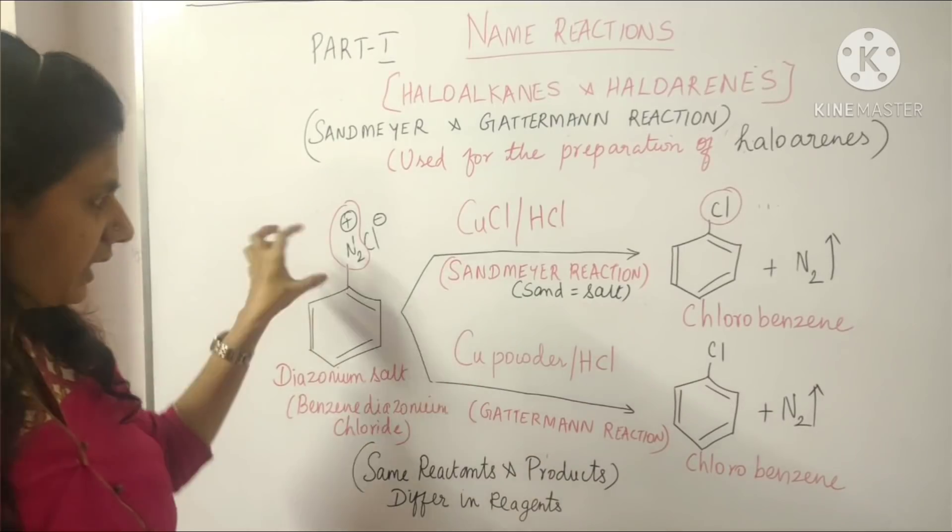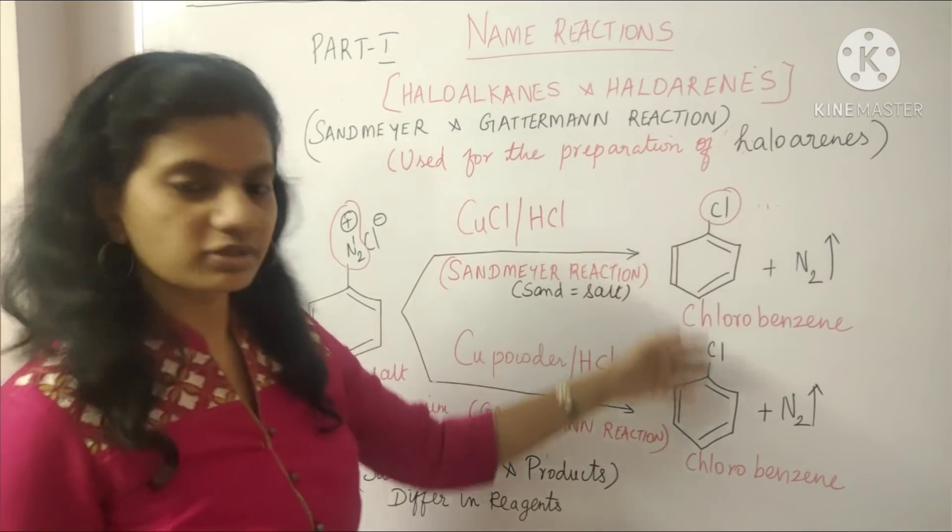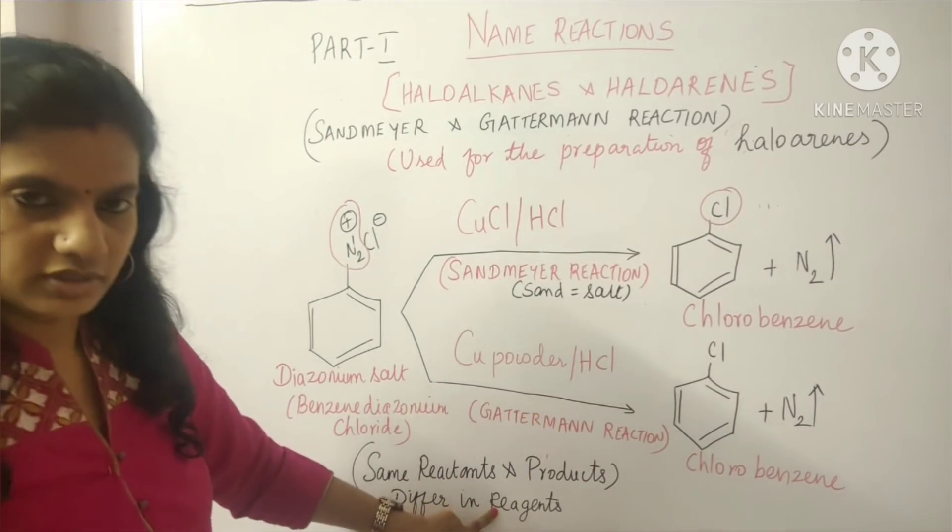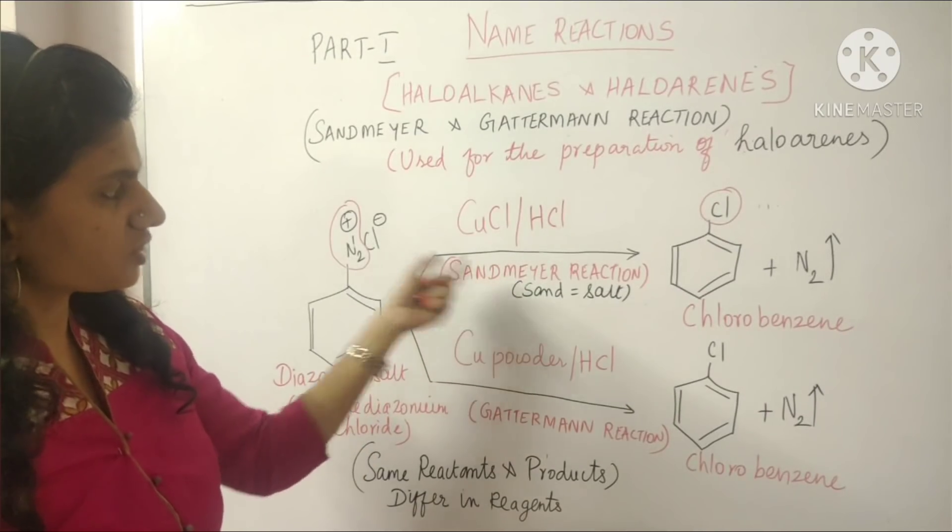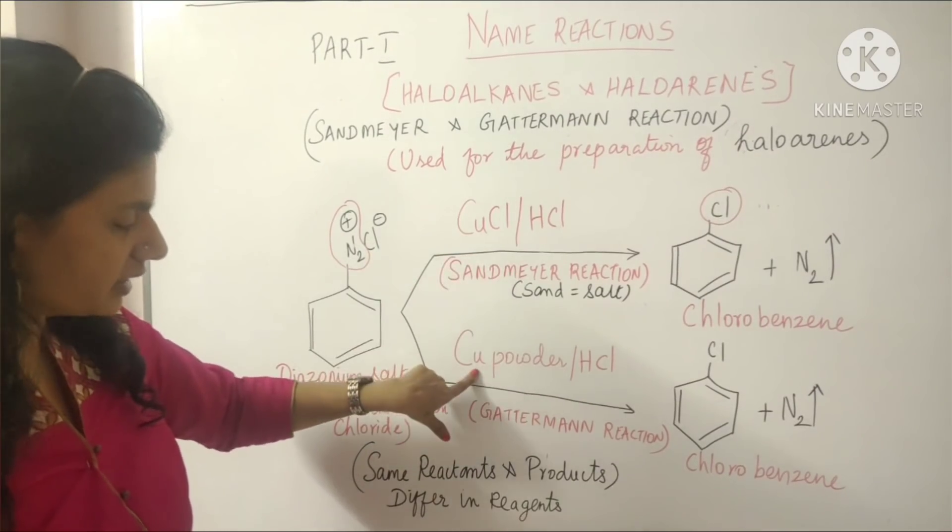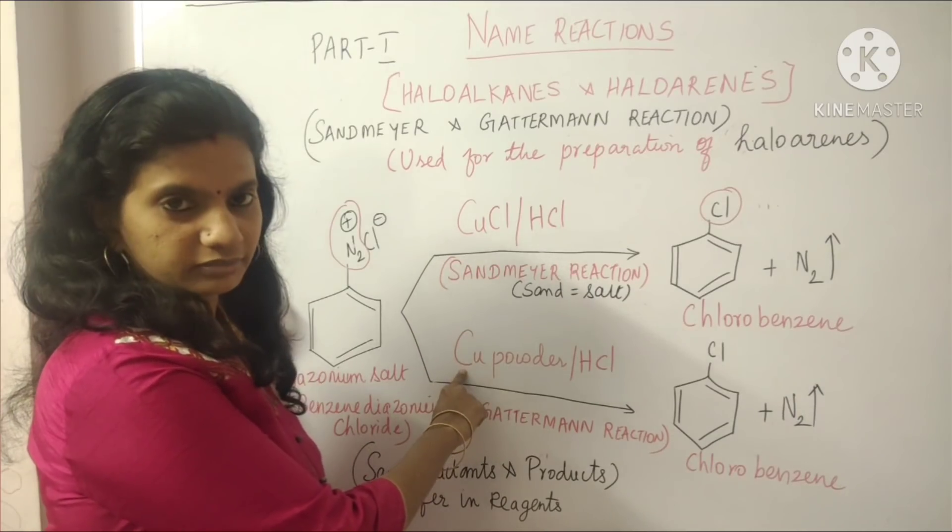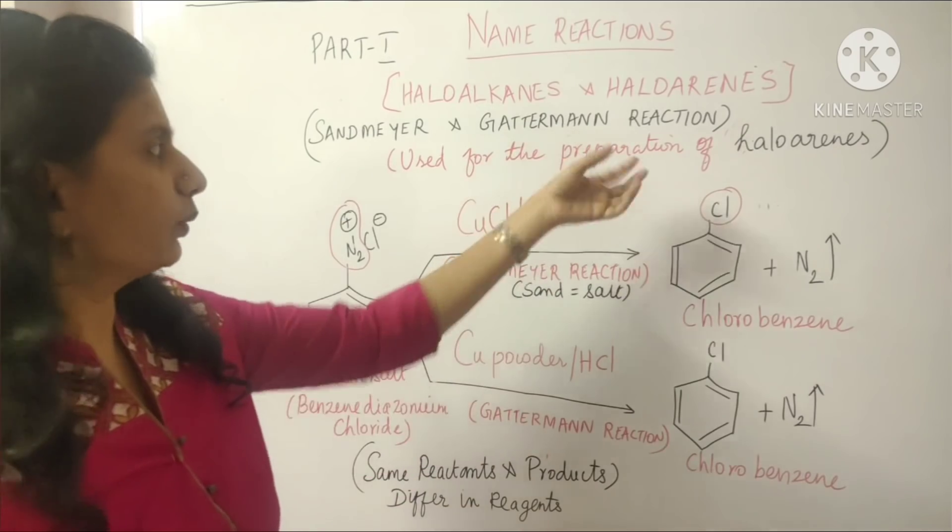In both the reactions, the reactants are same. Same reactants and products are also same. But only thing they differ in reagents. In Sandmeyer reaction, we are using cuprous chloride as a reagent. And in Gattermann reaction, look at this, we are using copper powder. This is the way we can synthesize the haloarenes.